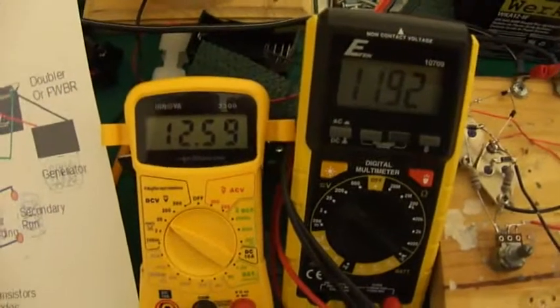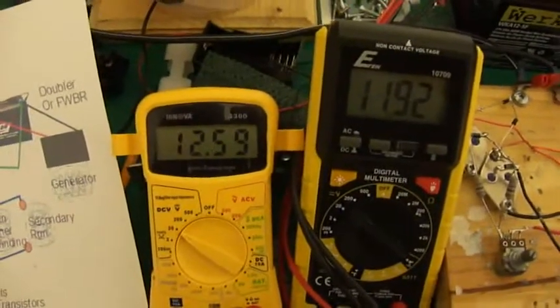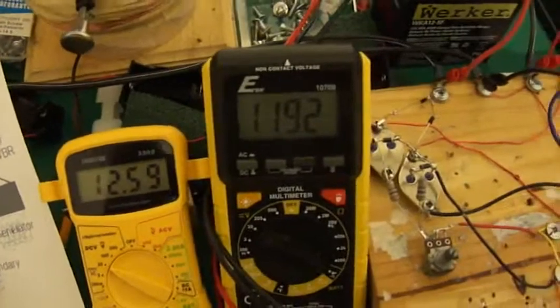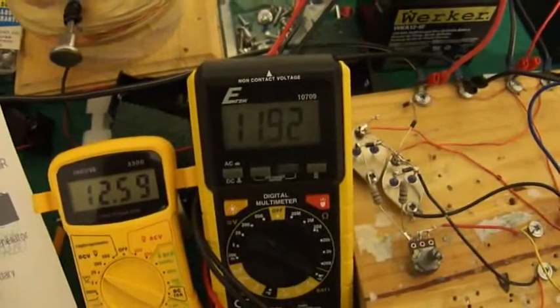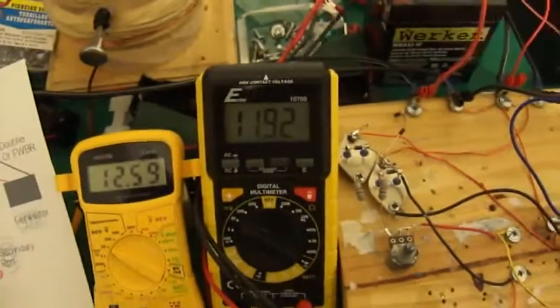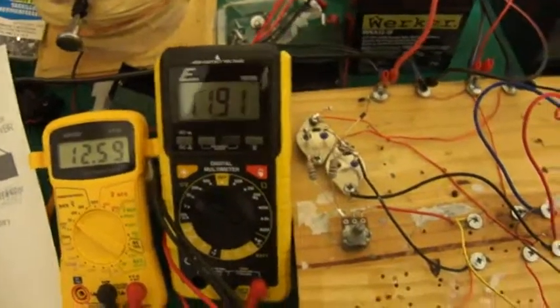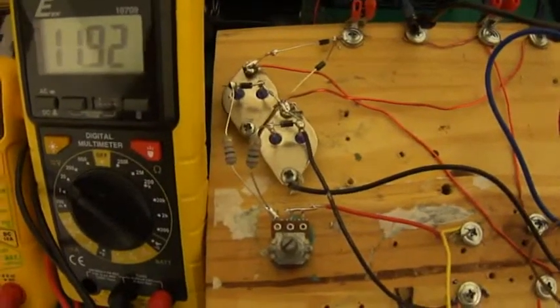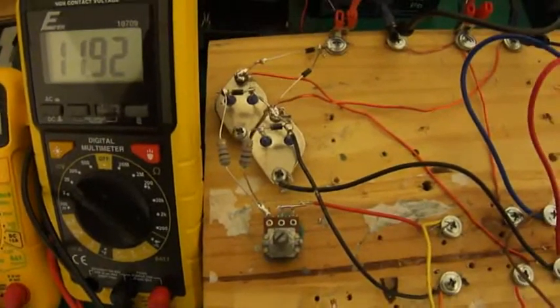The voltage on the charge battery is 12.59 going to 12.60, and 11.92 going to 11.91 on the run battery. I have two 2N3055s.